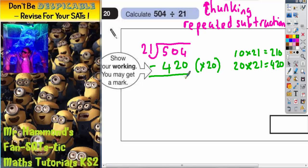Now when you subtract that, 4 take away 0 is 4. 0 take away 2 you can't do. So you borrow 1. It's 10. 10 take away 2 is 8. 4 take away 4 is nothing. So we're left with 84.